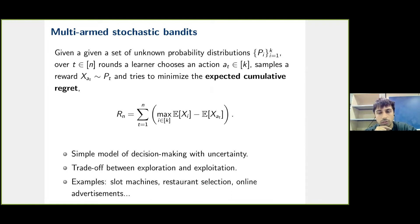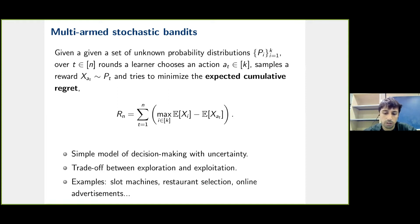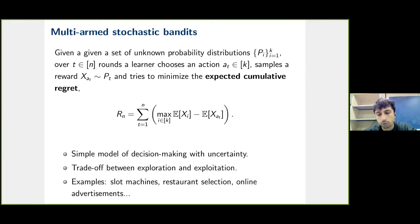The multi-armed stochastic bandit is a simple model of decision-making under uncertainty, with the key trade-off between exploration and exploitation. Real-world examples include slot machines, restaurant selection — where you can explore new places at the cost of uncertainty, or exploit places you know are good — and online advertisement and recommendation systems.